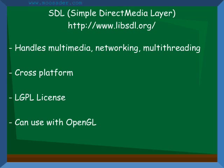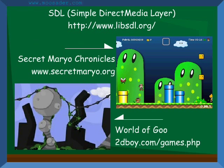SDL, or the Simple Direct Media Layer, is similar to the other APIs mentioned. It is slightly more difficult than Allegro, but it is also more powerful. Besides basic graphics, input and sound handling, it has functions for multithreading and an extended library for sockets. SDL can be used with OpenGL, is cross-platform, and uses the LGPL license. Some games made with SDL are World of Goo and Secret Mario Chronicles.